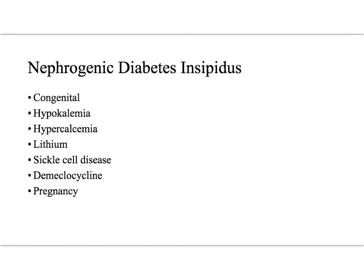Nephrogenic DI can also be congenital in nature, but the vast majority of times tends to be acquired. This can be due to hypokalemia — due to decreased adenylate cyclase — or hypercalcemia, lithium, sickle cell disease, and demeclocycline, which is often used to actually treat hyponatremia due to SIADH. And finally, pregnancy, which can be due to vasopressinase.